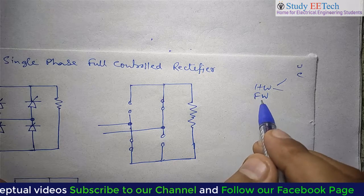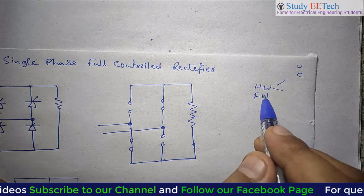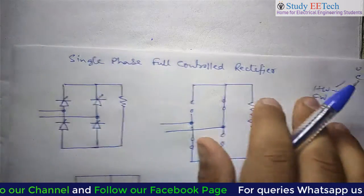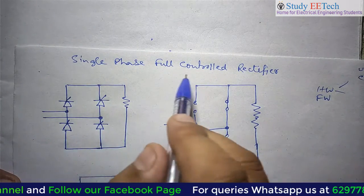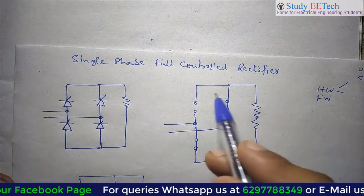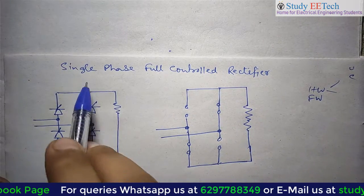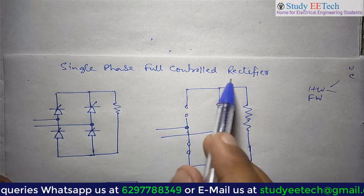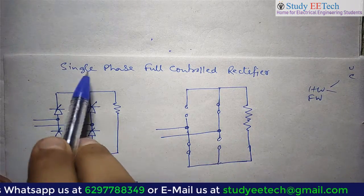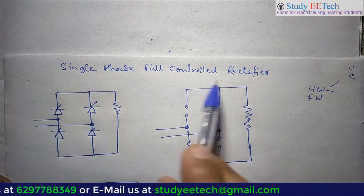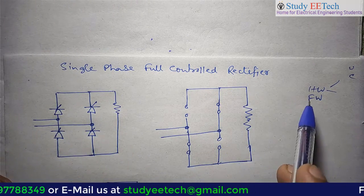Now we are going to take the Full-Wave Controlled Rectifier, which are two types. One is Single-Phase Full-Wave Controlled Rectifier. Later on we will take Single-Phase Half-Controlled Rectifier.